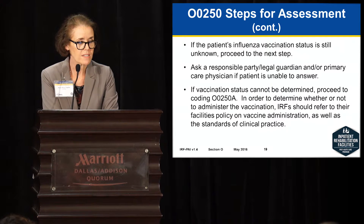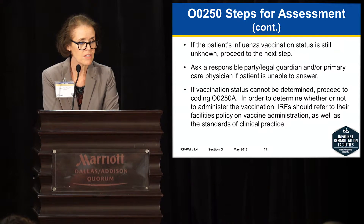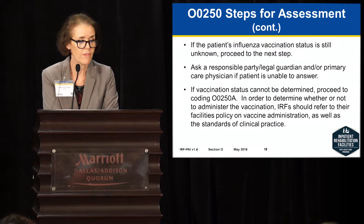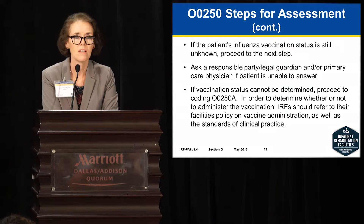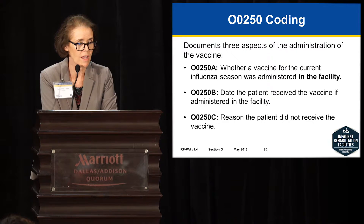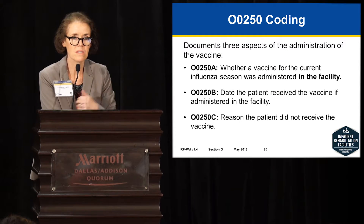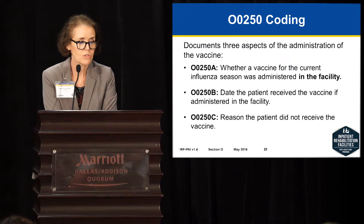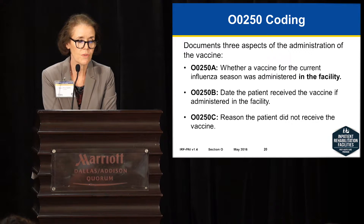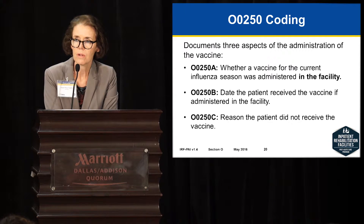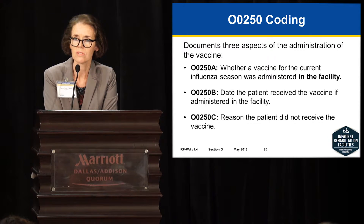If vaccination status cannot be determined, you proceed to coding O0250A to determine whether to administer the vaccination or not. There are actually three steps to this assessment: O0250A, O0250B, and O0250C. It really turns out you only have to answer two of the three, depending upon how you answer the first question.